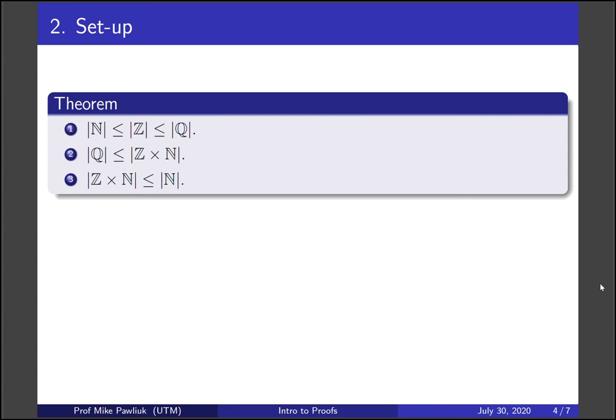But let's take a moment to think about once we've actually shown that this is true, what will we have proved? Well, once we prove all three of these things, by the Cantor-Schroeder-Bernstein theorem, we'll have shown that all of these sets have the same cardinality, and in particular the same cardinality as the naturals, so they're all countable. You should review the Cantor-Schroeder-Bernstein theorem or the statement of it if you don't believe this.